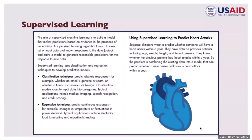Let's start with the different categories under supervised learning. The aim of this learning technique is to build a model that makes predictions based on evidence in the presence of uncertainty. The algorithms under this technique take a known set of input data and known responses to the data — or simply, output labels — and train a model to generate reasonable predictions for the response to new data.